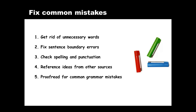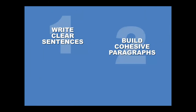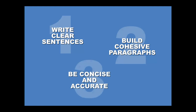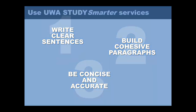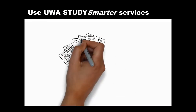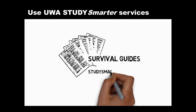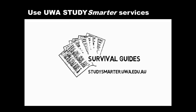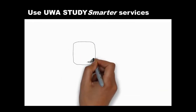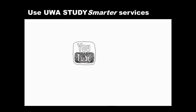In summary, you can make the writing you do for engineering concise and accurate if you follow these guidelines. We hope you've enjoyed this video and that it helps you write clear sentences, build cohesive paragraphs, and be concise and accurate, so that your engineering papers are easy to read and have impact. Remember there's lots of help available from Study Smarter at UWA — you can download survival guides from our website and access other Study Smarter YouTube screencasts to help with your writing. Good luck and see you soon.